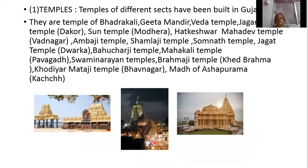During that period, many temples of different sects of Hindu religion were built in Gujarat. They include temples of Badra Gali, Gita Mandir, Veda Temple, Jagannath Temple at Dakor, Sun Temple of Modhera, Hathkeswar Mahadev Temple at Vadnagar, Ambaji Temple, Samalaji Temple, Somnath Temple, Dwarkadhish Temple at Dwarka, Bahucharaji Temple, Mahakali Temple at Pavagadh, Swami Narayan temples, Brahmaji Temple at Khed Brahma, Kodiyar Madhaji Temple at Bhavnagar, and the Math of Ashapura.